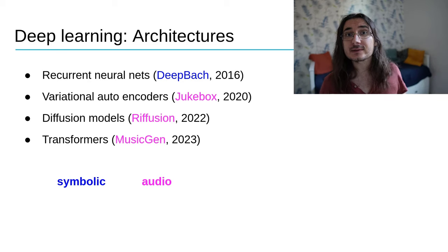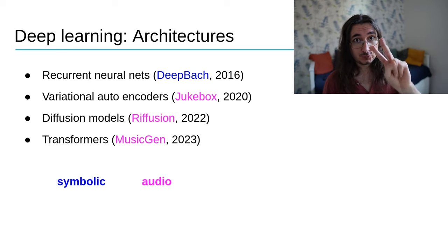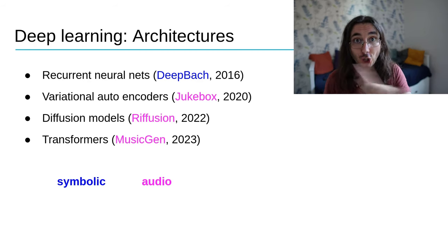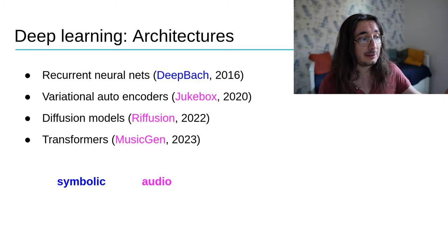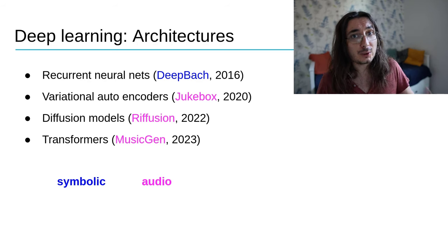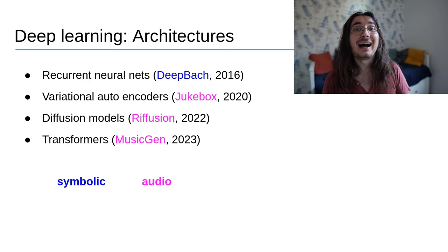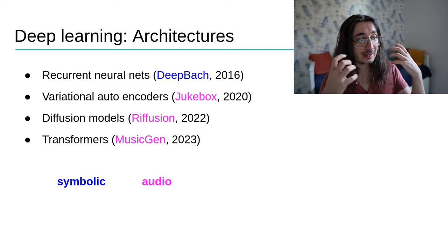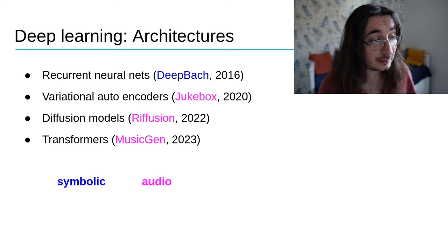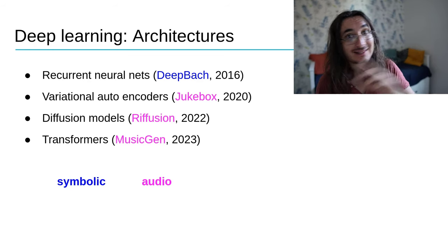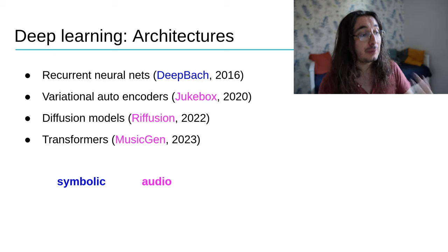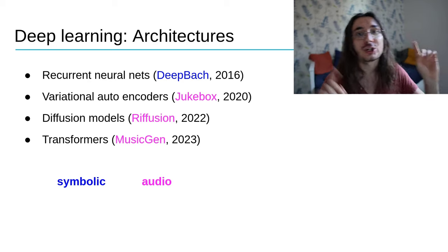In this course I'll be covering two architectures: diffusion models — specifically Riffusion — and transformers, specifically MusicGen. I won't cover recurrent neural networks or variational autoencoders here, but I have two separate playlists: one where I use RNNs for generating melodies, and a whole other series dedicated to generating sound with variational autoencoders. You can definitely check those out.